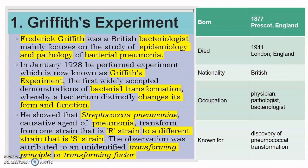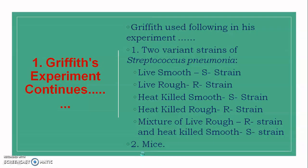Griffith experimentally showed that Streptococcus pneumoniae, the causative agent of pneumonia, gets transformed from the R strain (rough strain) to the S strain (smooth strain). At that time, the transforming principle or transforming factor had not been discovered. So Frederick Griffith named the factor responsible for this transformation the 'transforming factor' or 'transforming principle.'